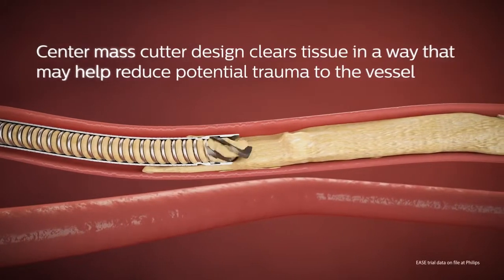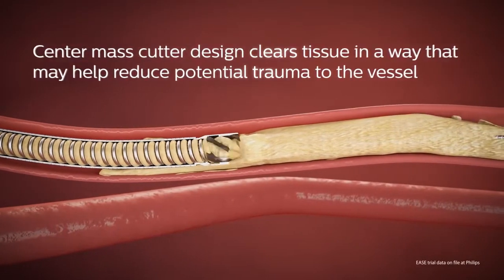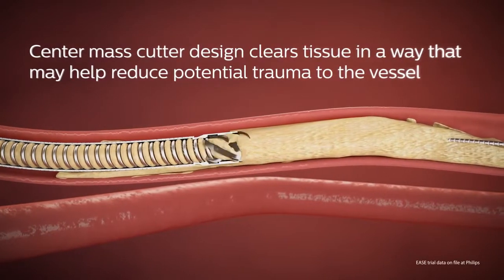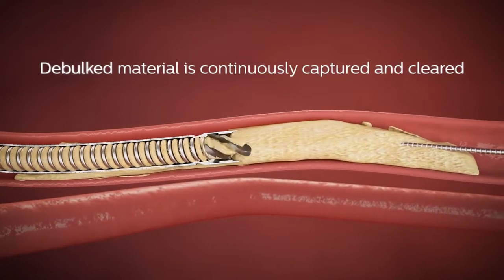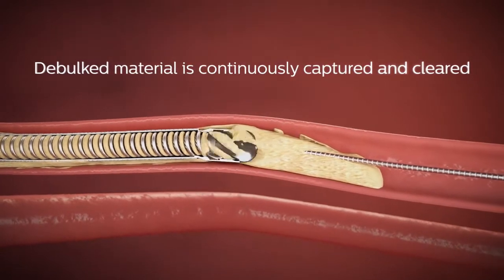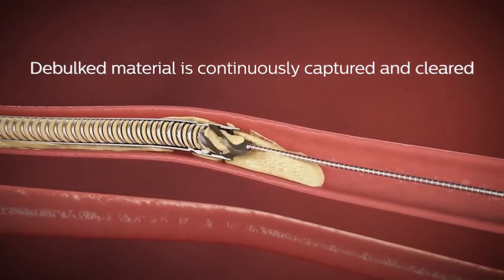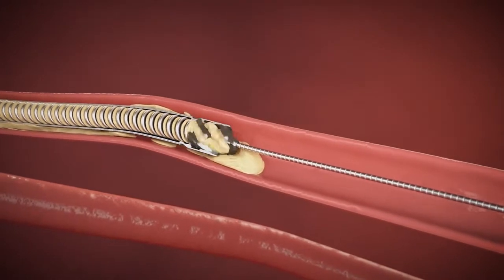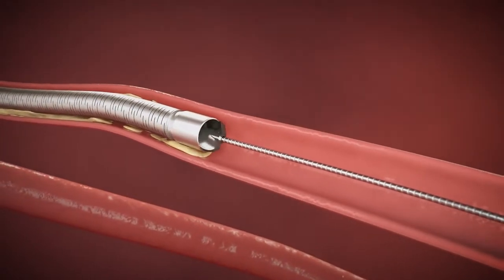The center mass cutter design clears tissue in a way that may help reduce potential trauma to the vessel. As the cutting element rotates, disease is debulked at a controlled diameter and is continuously captured and cleared from the body. This allows for blood flow to be quickly restored to the distal vessels.